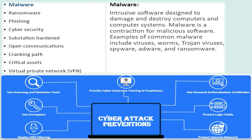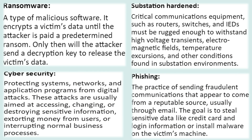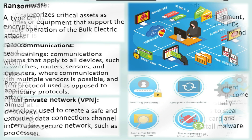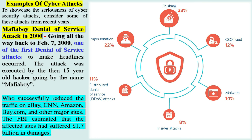Examples of Cyber Attacks: The Mafia Boy Denial of Service Attack in 2000. Going back to February 7, 2000, one of the first denial of service attacks to make headlines occurred. The attack was executed by a then-15-year-old hacker going by the name Mafia Boy, who successfully reduced traffic on eBay, CNN, Amazon, BUI.com, and other major sites. The FBI estimated the affected sites suffered $1.7 billion in damages.